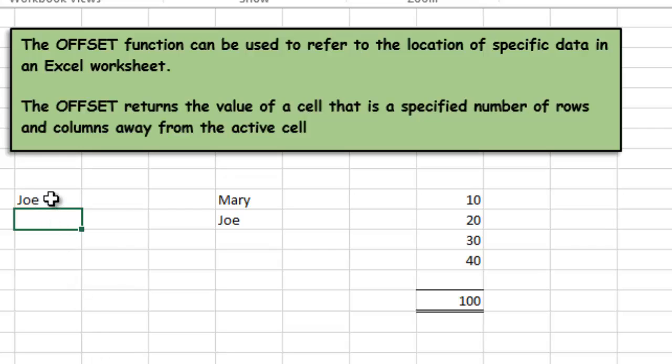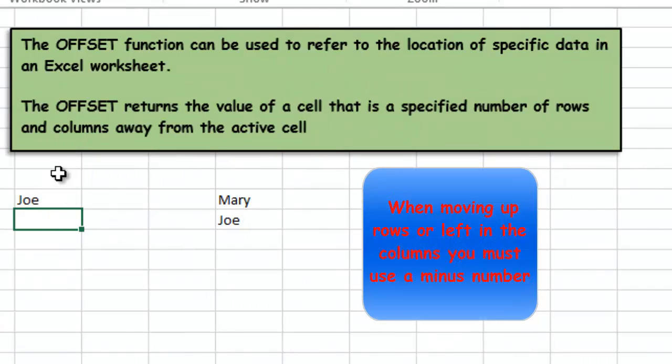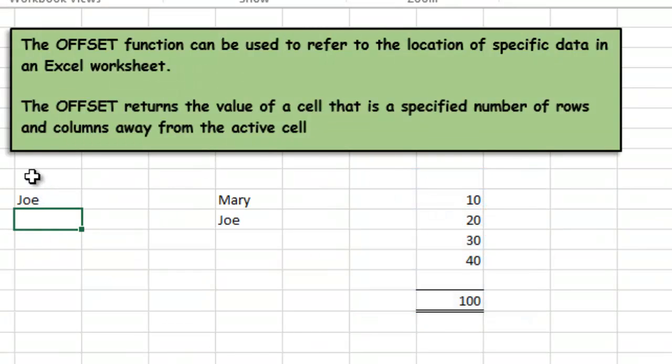If you are moving up, you would go minus one, and if you were moving to the left, you would say minus in the column numbers. So that's the basis of the OFFSET function. The OFFSET function on its own can pull in data from a specified number of cells away from a given reference, but it's also very useful in the SUM formula.